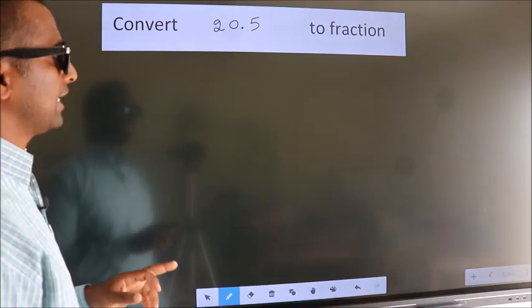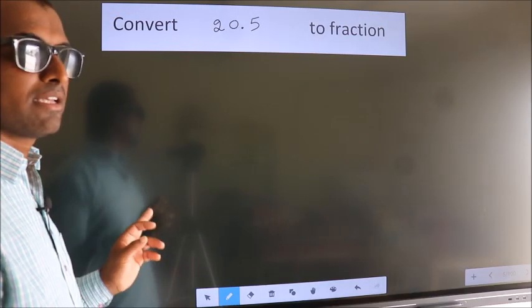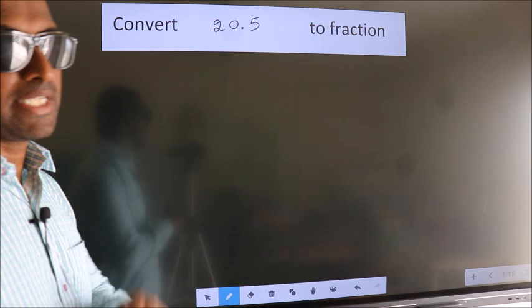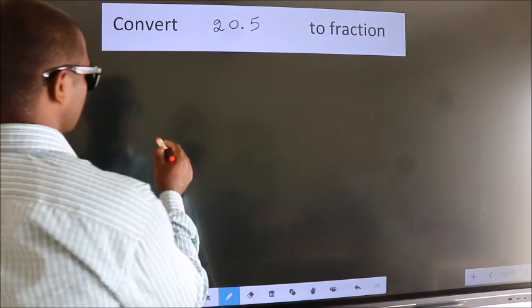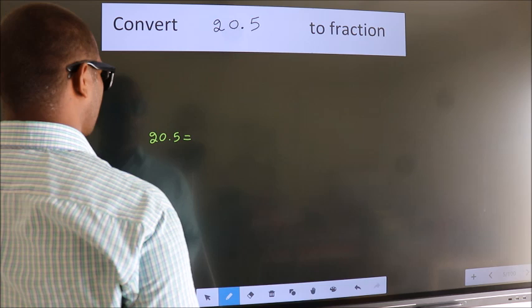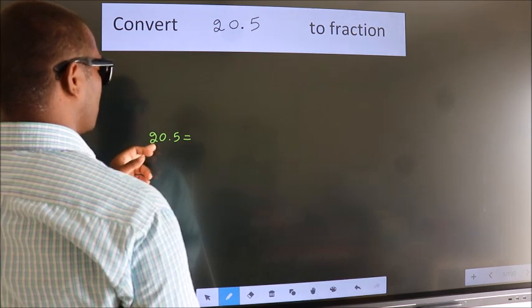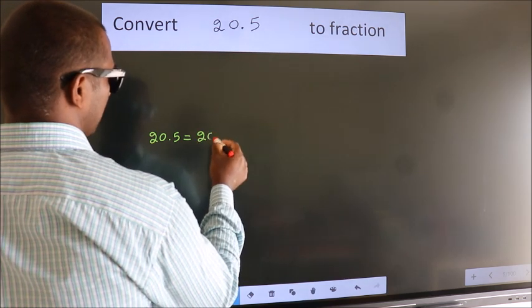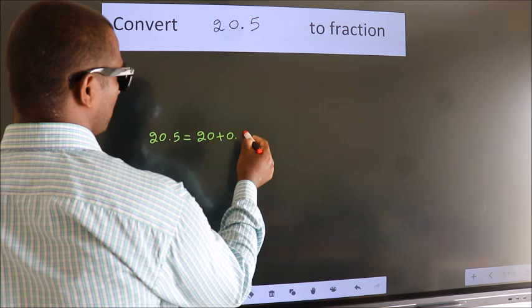Convert 20.5 to fraction. How do we convert? Given is 20.5. First, we should break this into 20 plus 0.5.